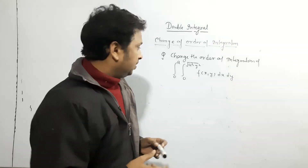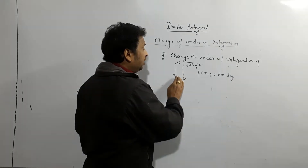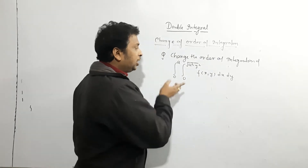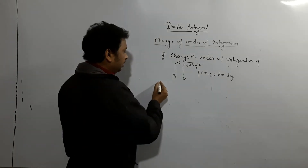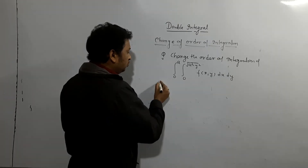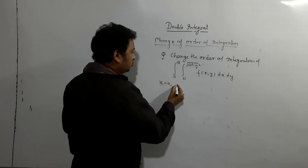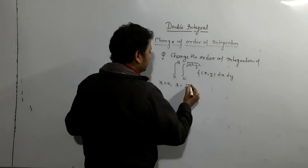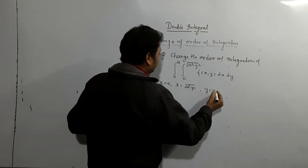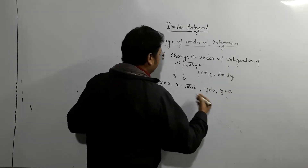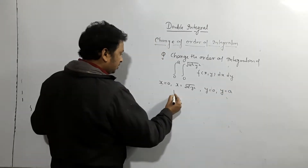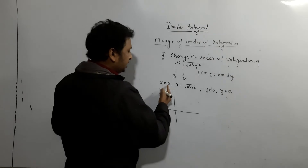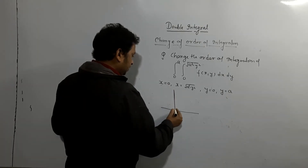The first step: based on the given limits, draw the picture. What are the limits given? x = 0, x = √(a²−y²), y = 0, and y = a. This is the reason — this is how we draw the picture. x = 0 means this is the y-axis.